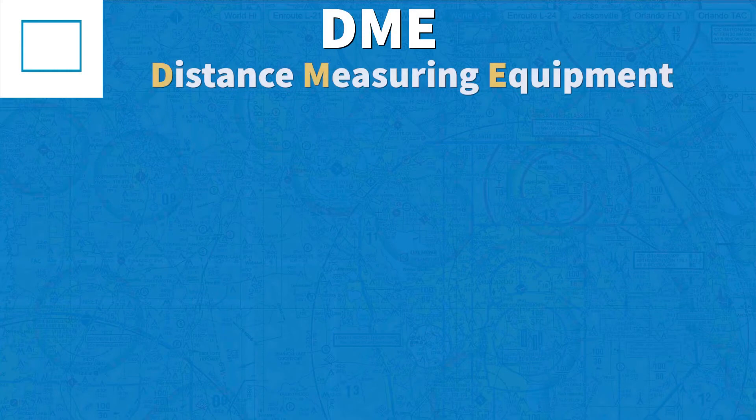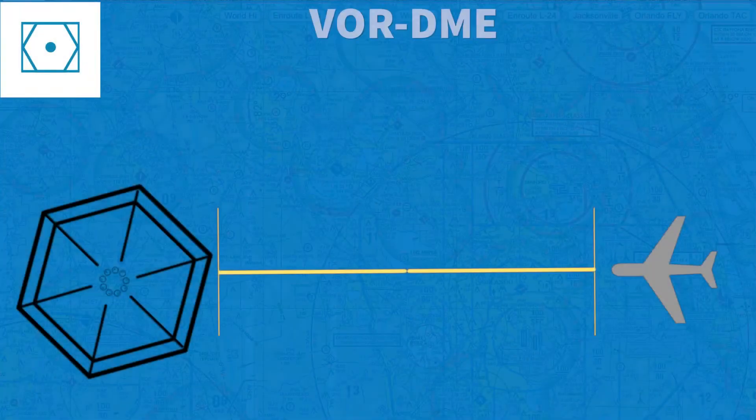Moving on, you are going to find this blue rectangle. It represents a DME, or distance measuring equipment. If you see a VOR symbol combined with a DME, it means that that VOR has distance measuring equipment.